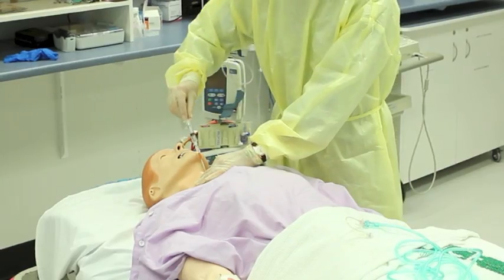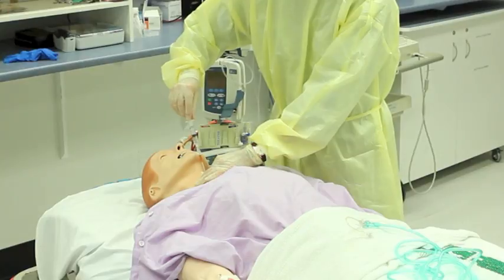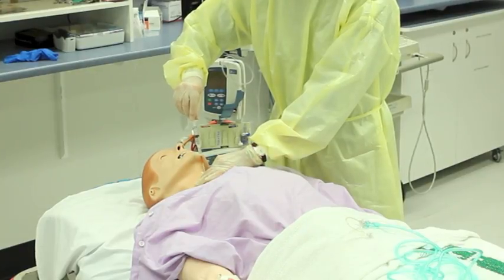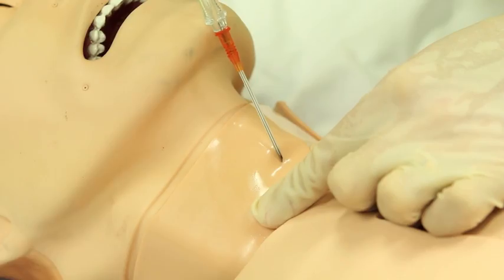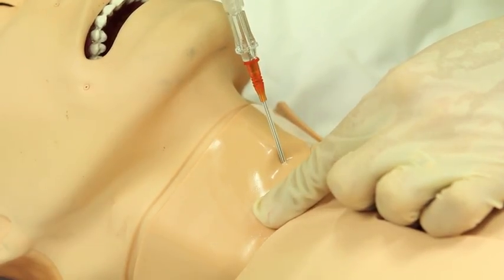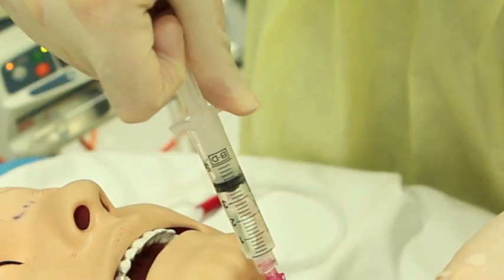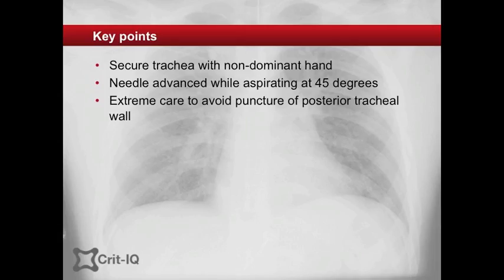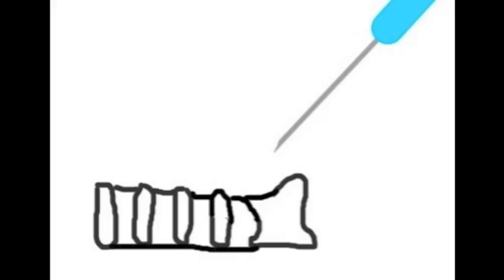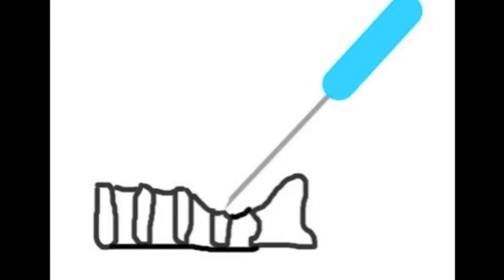While securing the trachea with the non-dominant hand, the needle is introduced in a caudal direction at a 45 degree angle to the skin. The needle is carefully and slowly advanced, while the syringe is aspirated continuously as the needle is introduced, until air can be seen bubbling through the saline. Great care must be taken to avoid inadvertent puncture of the posterior wall of the trachea. This is particularly so in young children, as the cartilages of the trachea are very soft, and the trachea can be completely compressed by the needle if not careful.